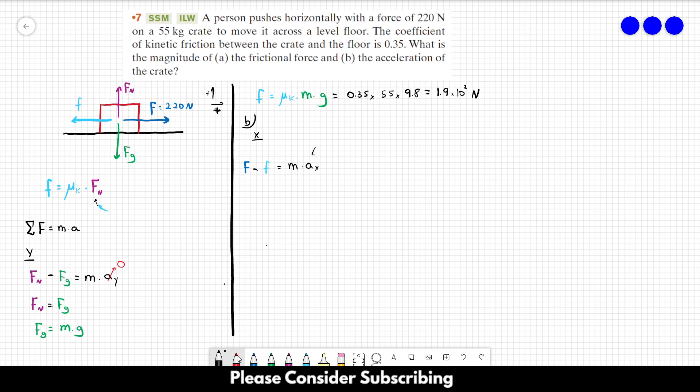So we want to find acceleration in the x direction. So let's just send mass to the other side. This is going to be F minus friction over mass. So this is equal to 220 minus 188.65 over 55. And this gives us roughly 0.57 meters per second squared.